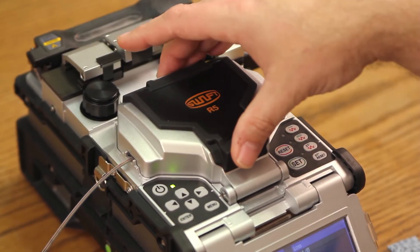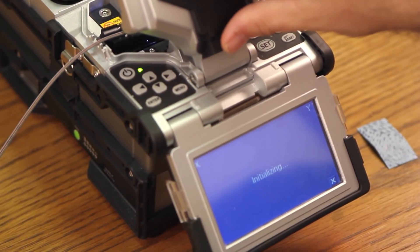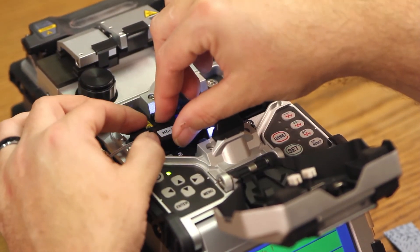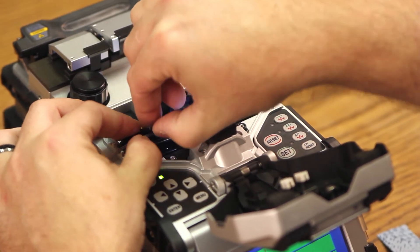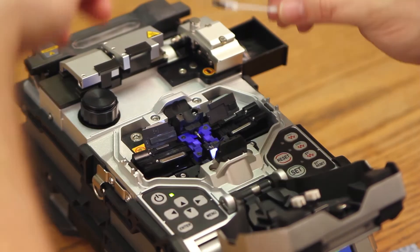Once complete, open your wind cover. Allow the machine to perform a tensile test. Once it comes back to main screen, you can open your holders. Remove your connector.